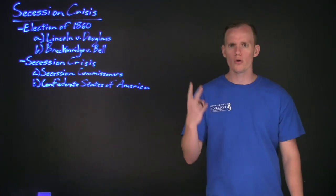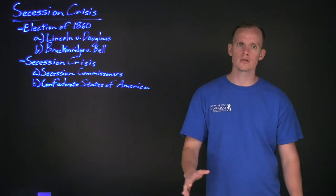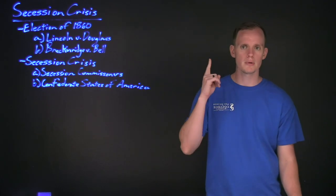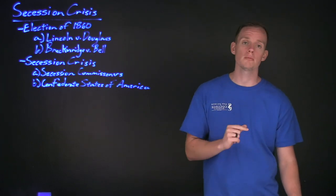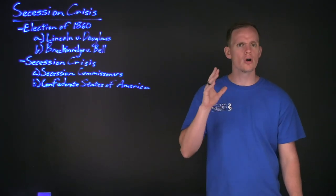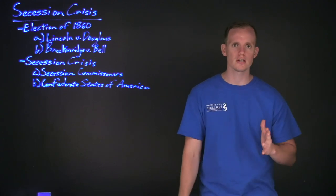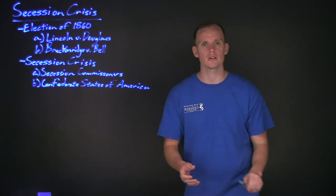The two noteworthy differences between those two documents was one, that the southern president, who would be Jefferson Davis here soon, would only be allowed to serve one six-year term. And then the other major difference is no less than ten times there was a mention of the word slavery, something that before the 13th Amendment was not mentioned in the U.S. Constitution.